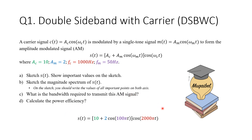To address what's required, I've substituted the given values: A_c = 10, A_m = 2, the carrier frequency gives 100π, and the message frequency gives 2000π. So we need to sketch this signal in time, sketch it in frequency, find the bandwidth, and find the power efficiency.